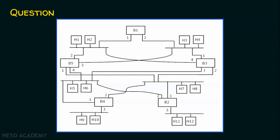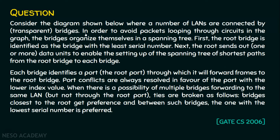Then we are required to find the depth first traversal of the spanning tree. In the question, it is given that the bridges organize themselves in a spanning tree because these bridges have the potential of spanning tree protocol. What spanning tree protocol will do — we have already seen in the previous lecture — is that a root bridge is selected. This root bridge will be the center of the network, and all switches will reach the root bridge in order to reach their destination. The ports used for forwarding data to the root bridge are called the root port, and per link only one root port will be there.